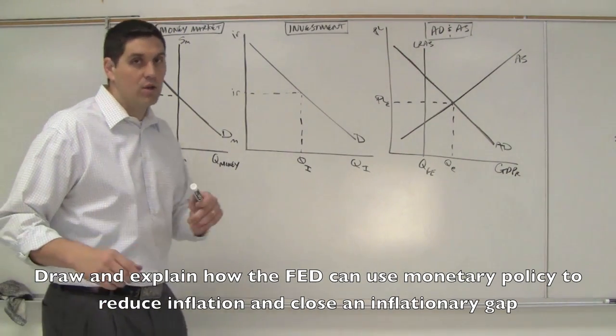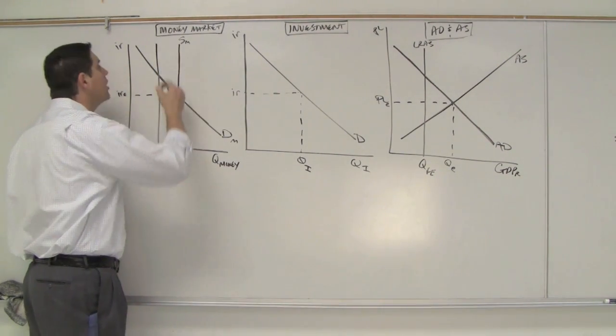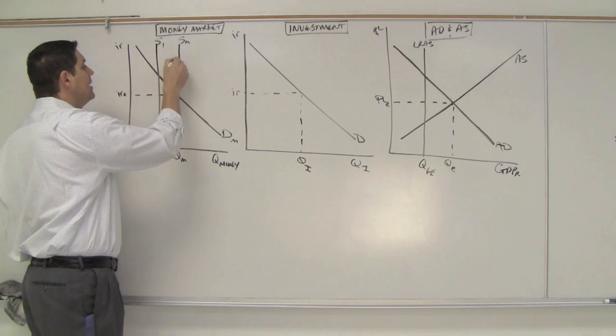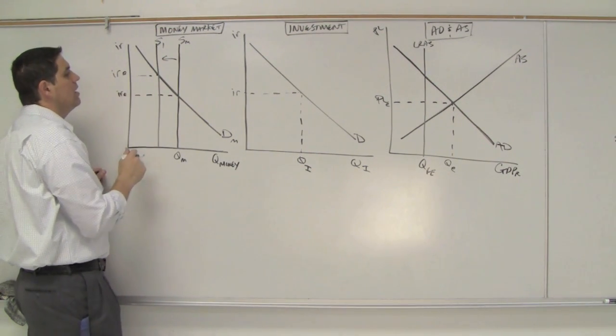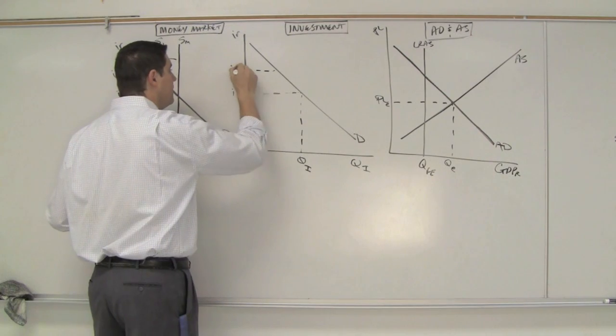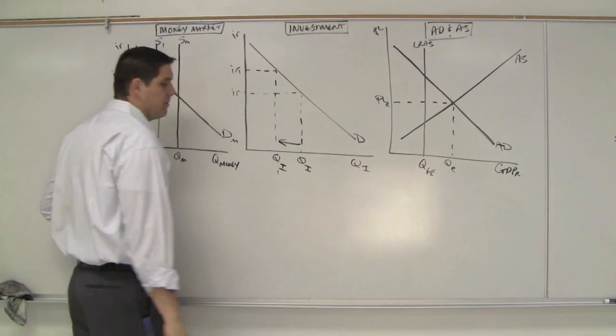Alright, you got it? You know what's going to happen? Let's find out. First, we know the Fed is going to decrease the money supply. Decreasing the money supply will lead to higher equilibrium interest rates. That higher interest rate, right here, interest rate one,